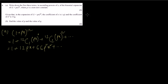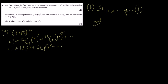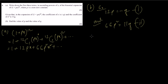In question 4b: given that in the expansion of (1 plus px)^12, the coefficient of x is minus q. The coefficient of x here is 12p, and that equals minus q — that's equation 1. The coefficient of x² is 11q. The coefficient of x² is 66p², and that equals 11q — that's equation 2. So we have to solve the simultaneous equations.